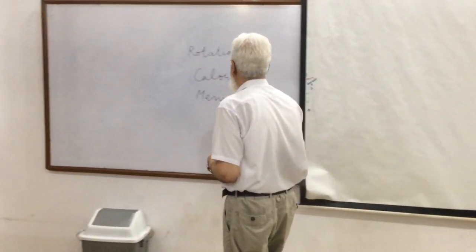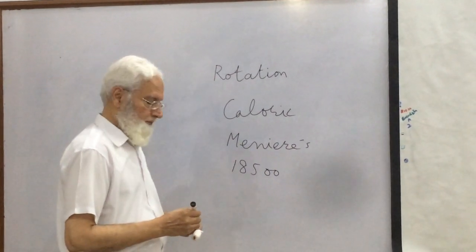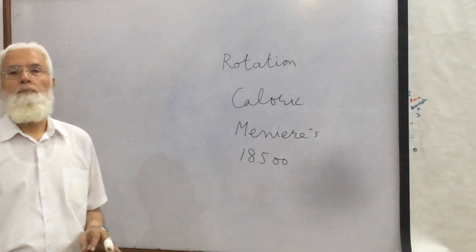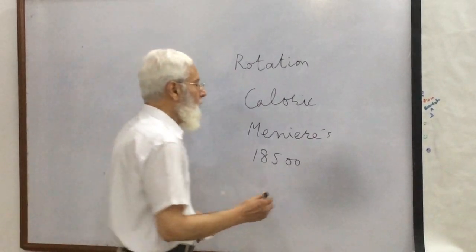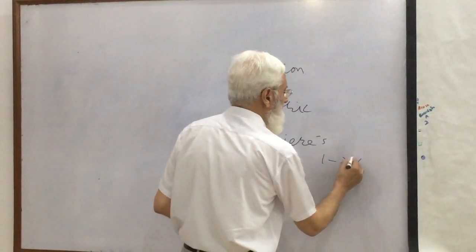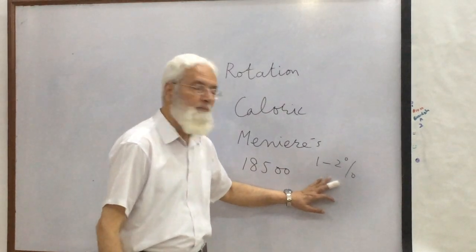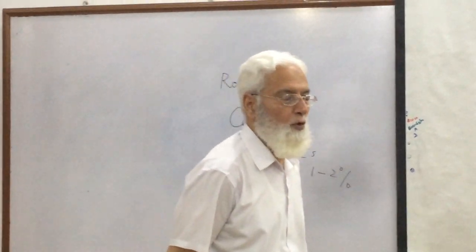The vestibular part of the eighth cranial nerve contains about 18,500 nerve fibers. Most of the fibers are afferent — sensory. Only one to two percent of fibers are efferent — motor. These motor fibers are thought to be inhibitory.